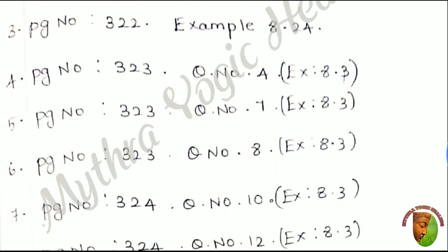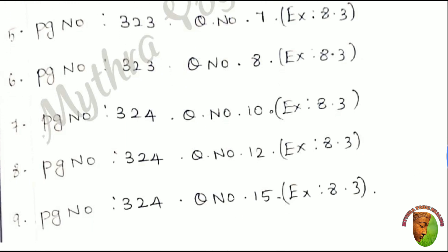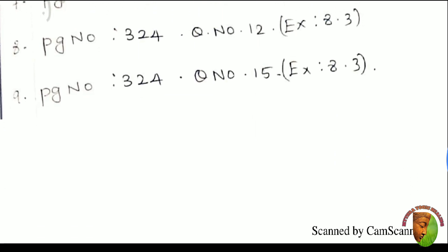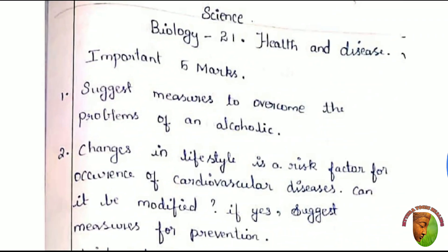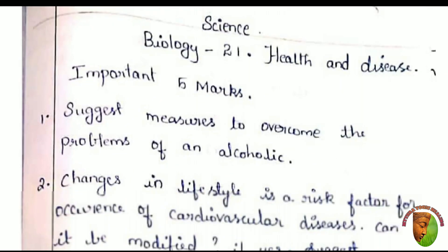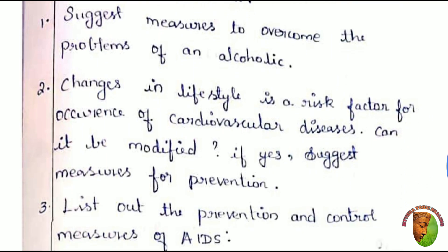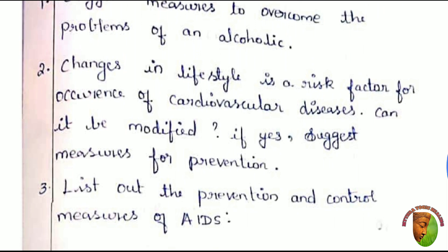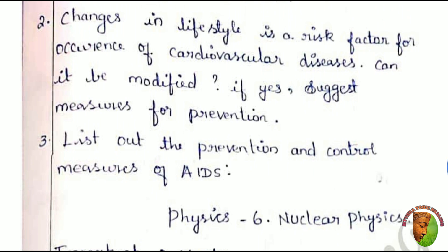Science — chapter-wise, the important sums and lessons. In science, biology 21st lesson is covered, with 5-mark questions as seen in the last video. Additionally, 2-mark questions are given. So there are 3 marks on the 3rd marks. In physics, there are 2 marks on the 6th lesson.